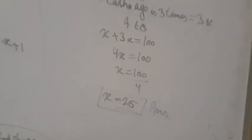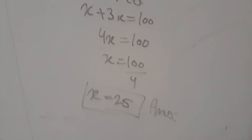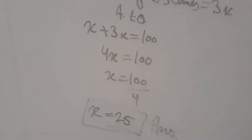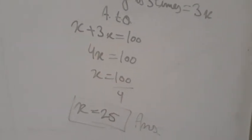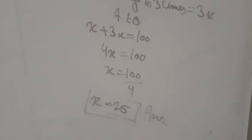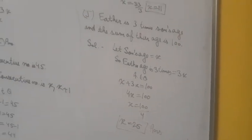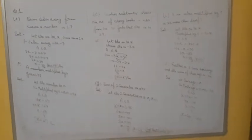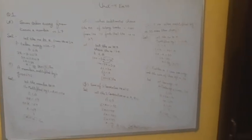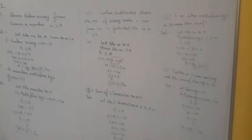x + 3x = 4x = 100. So x = 100 ÷ 4 = 25. That is the answer, children. This completes the first question of Exercise 4D. And children, I have one good news for you.